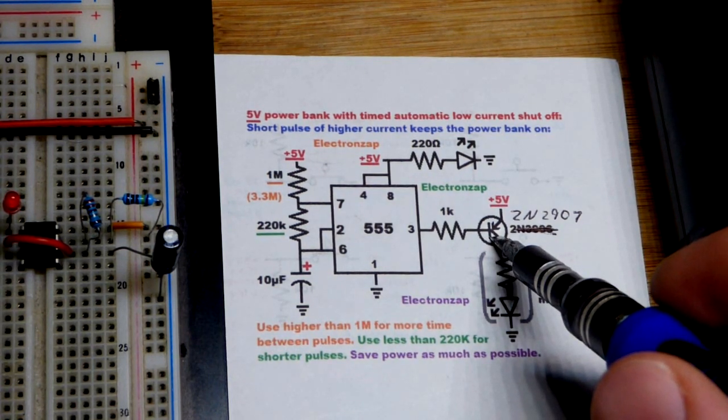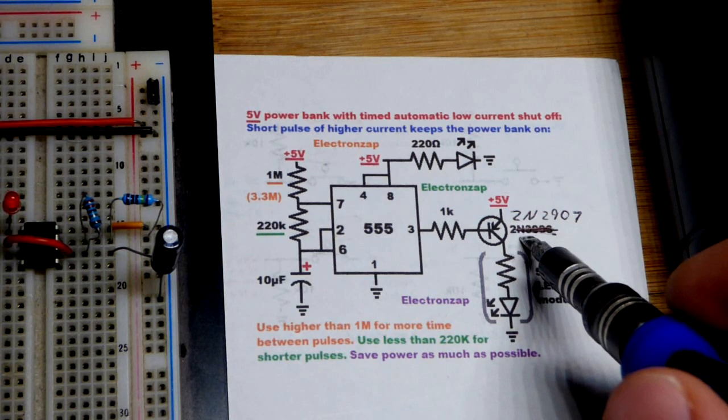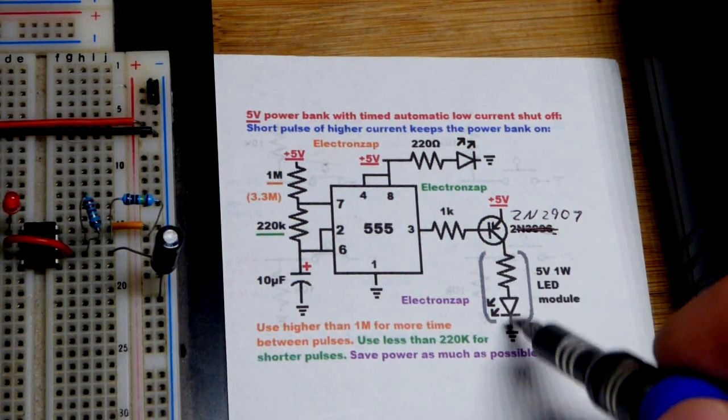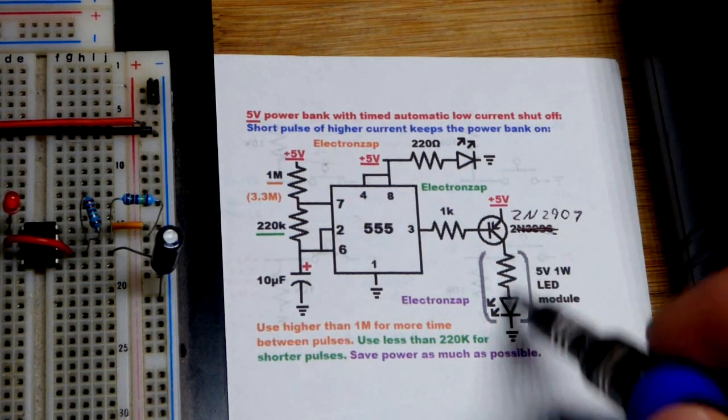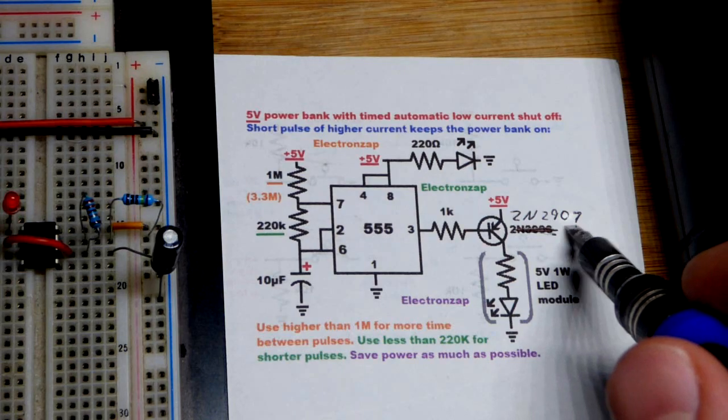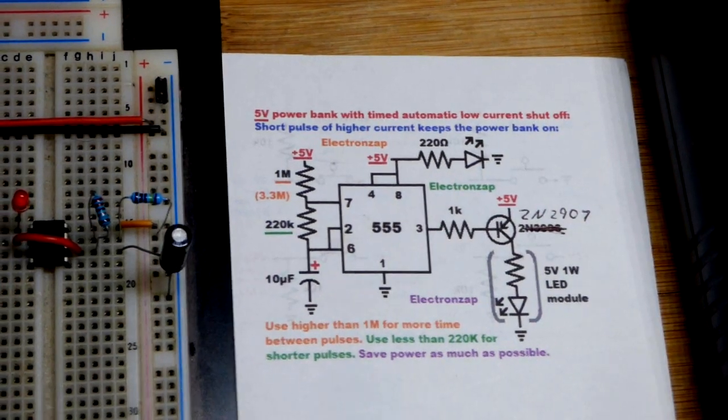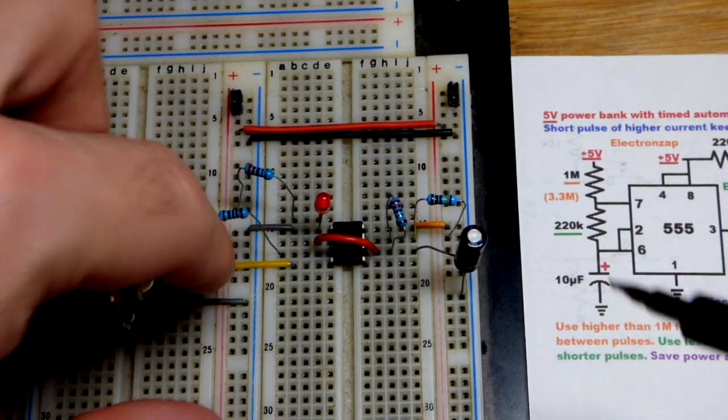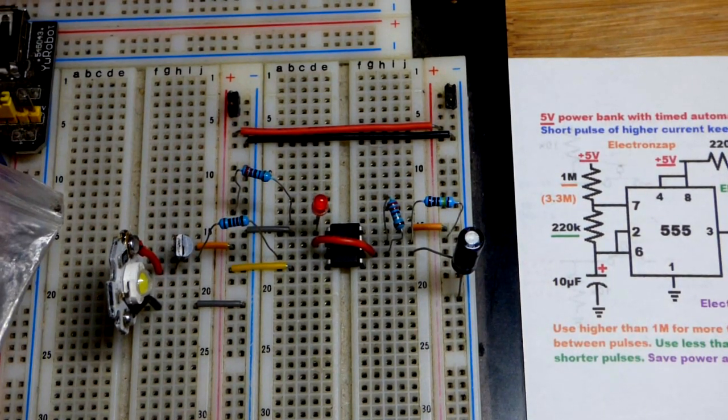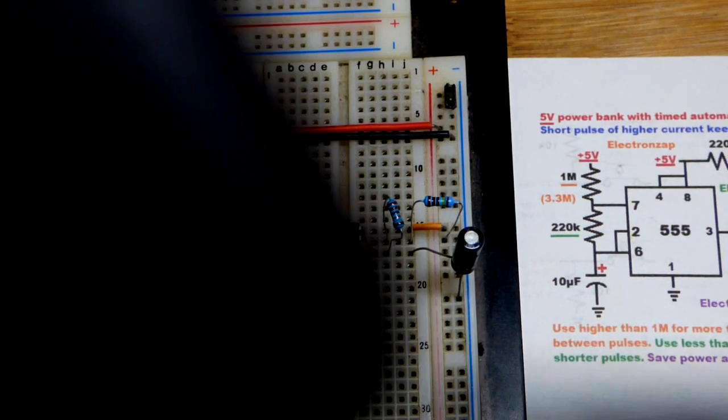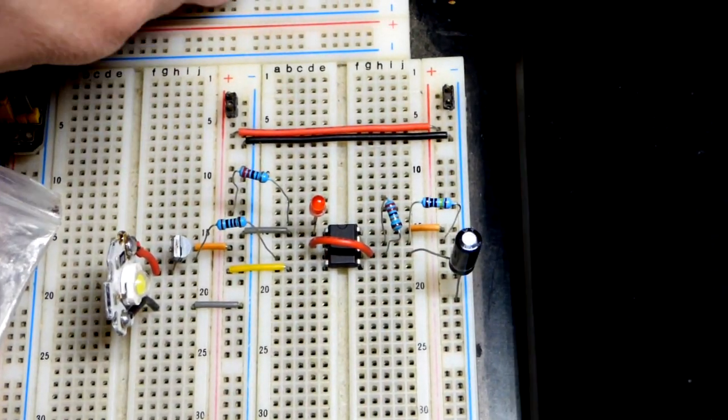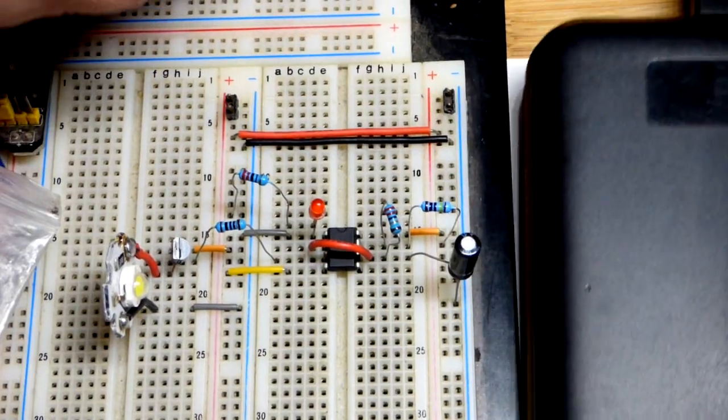It's going to control a PNP bipolar junction transistor. I don't recommend using the 2N3906 because we're going to need about 200 milliamps of current, so I got the 2N2907 that I have on the board. It's just an astable mode 555 timer, the output is going to be high longer than it is low.